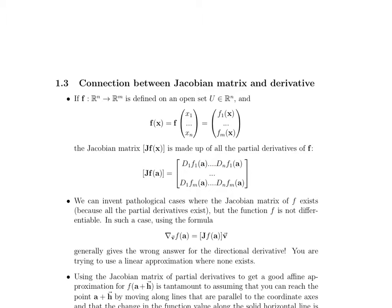Now we can invent some pathological cases where the Jacobian matrix of f exists because all the partial derivatives exist, but the function itself is not differentiable. And in these particular cases, which we will be talking about in class, using the formula for the directional derivative, where we take the Jacobian and multiply it by v, the direction we're moving in, generally gives the wrong answer for the directional derivative. Basically, the problem is that we're trying to use a linear approximation where one does not exist.